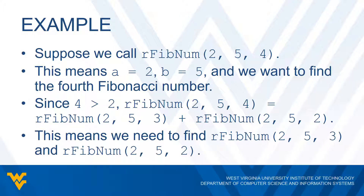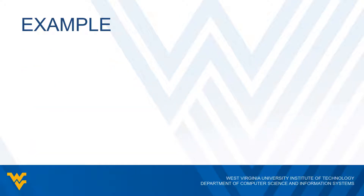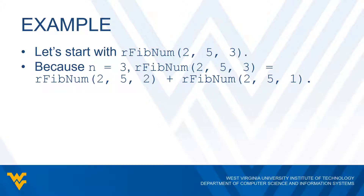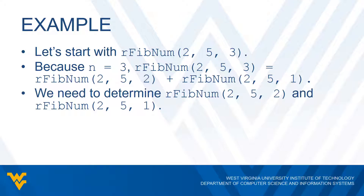To get our results, we have to find RFibNum(2, 5, 3) and RFibNum(2, 5, 2) first. Starting with RFibNum(2, 5, 3): N is three, which is greater than two, so we compute RFibNum(2, 5, 3) by adding RFibNum(2, 5, 2) and RFibNum(2, 5, 1). That means we need to figure out RFibNum(2, 5, 2) and RFibNum(2, 5, 1).